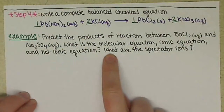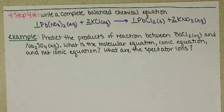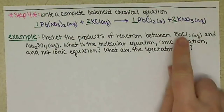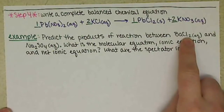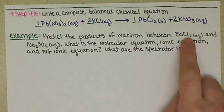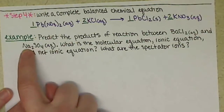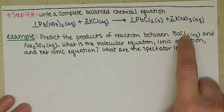We also want to answer the question of what are the spectator ions. Following our steps from the previous video, we want to first split apart our ions. So we have barium ion and chloride ion, and opposites are going to attract — barium is going to be attracted to the sulfate ion, and the sodium ion will be attracted to the chloride ion.